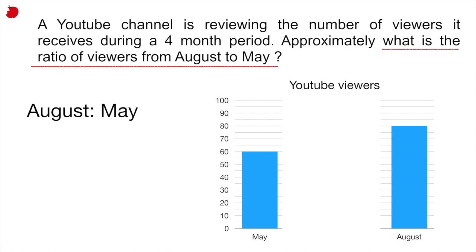So look at the column on the right, the August, and I want you to follow it to the top of the column. And then when you get to the top, follow it to the left, to the y-axis. And that's telling you, you had 80 viewers in August. Do the same thing for May, follow it to the top and then to the left. So 60 viewers in May. So that's your ratio, 80 to 60.